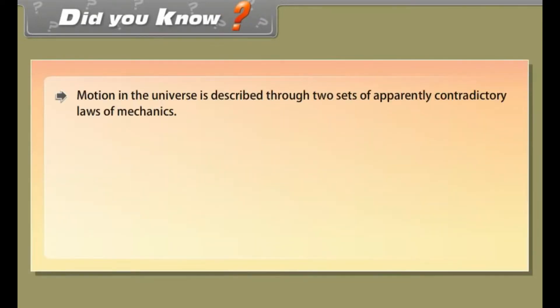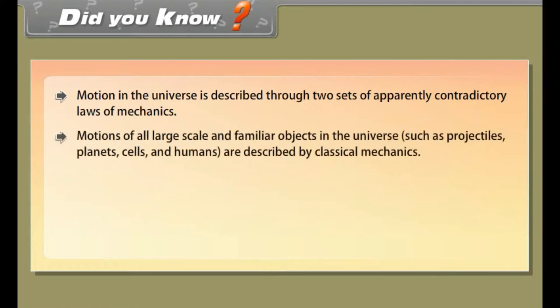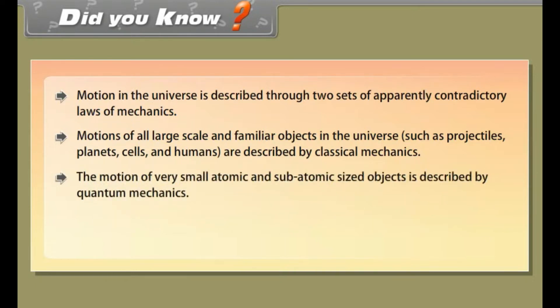Did you know? Motion in the universe is described through two sets of apparently contradictory laws of mechanics. Motions of all large-scale and familiar objects in the universe, such as projectiles, planets, cells, and humans are described by classical mechanics. The motion of very small atomic and subatomic-sized objects is described by quantum mechanics.